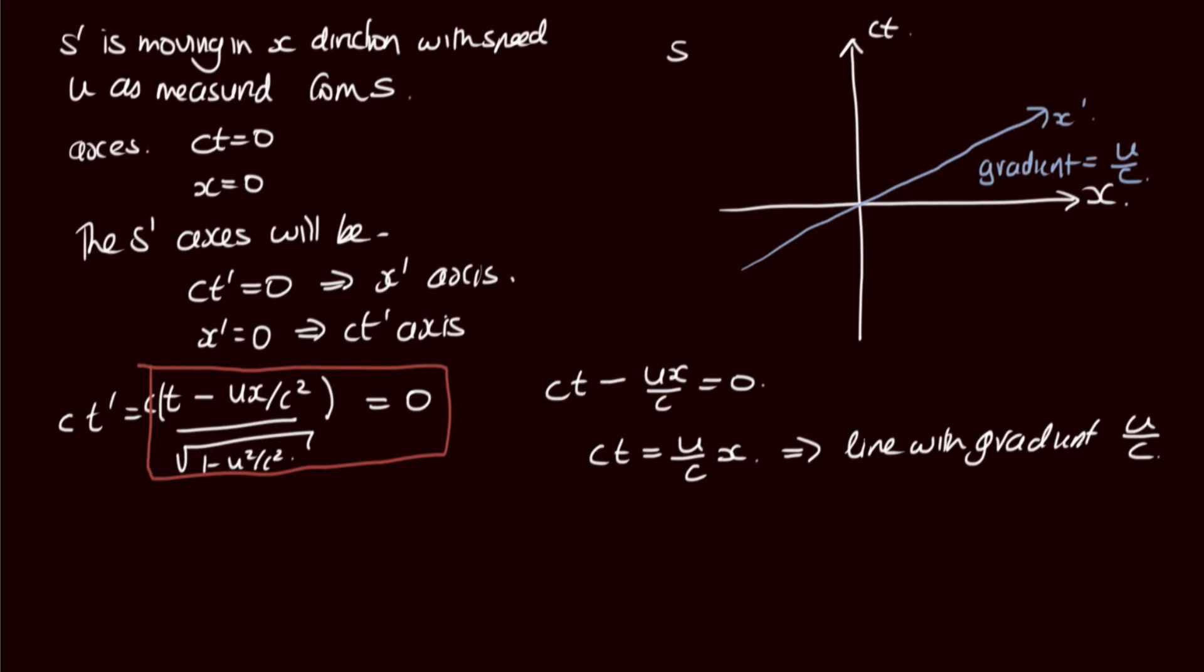Let's do our next axis. Our next axis is x' equals zero, which is the ct' axis. So we've got x' equals (x minus ut) over the square root of (1 minus u²/c²) equals zero. Again, we'll just take this part of it, multiply both sides by the square root of (1 minus u²/c²), and we end up with x minus ut equals zero. So we can write this as x equals ut.